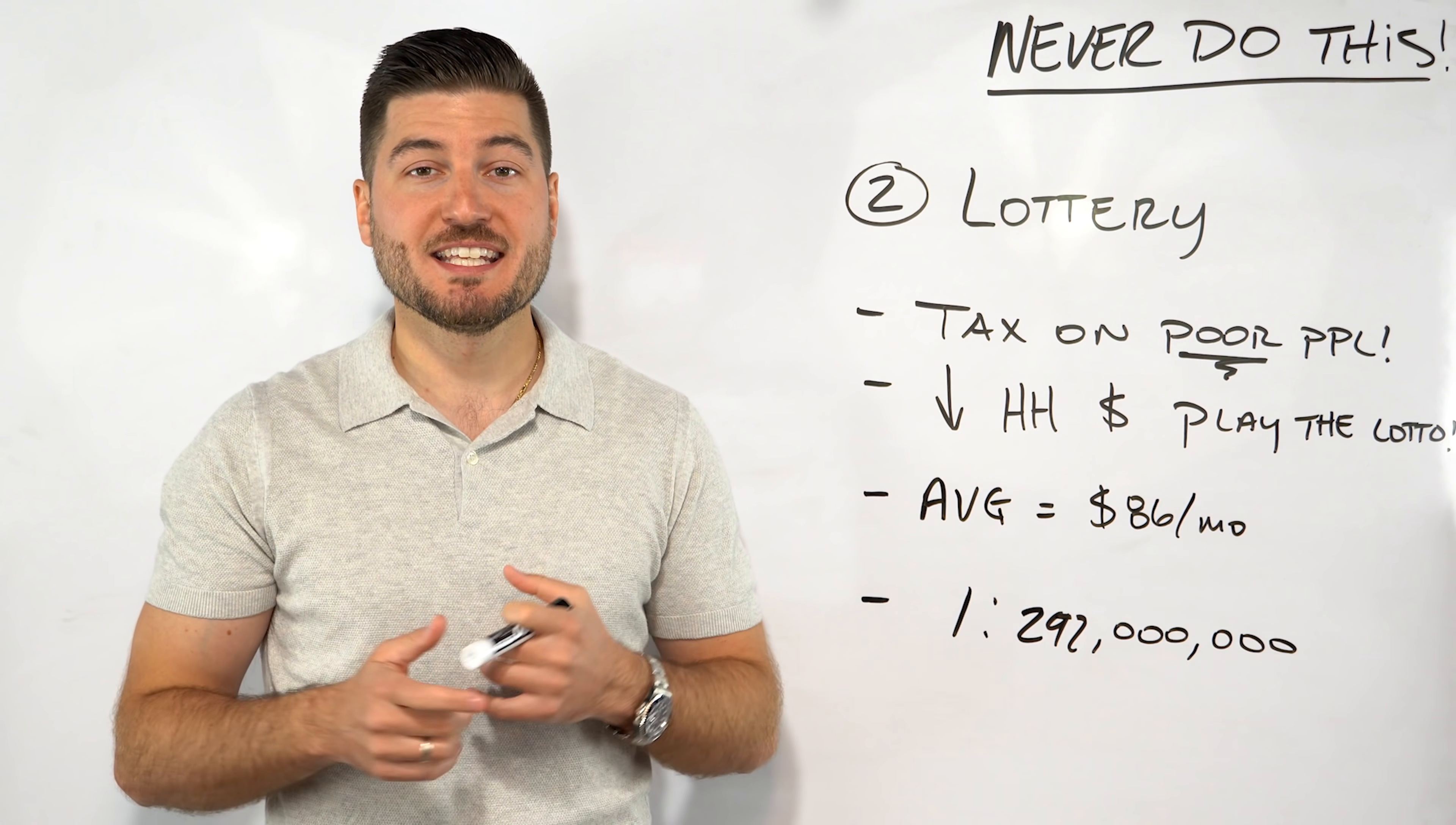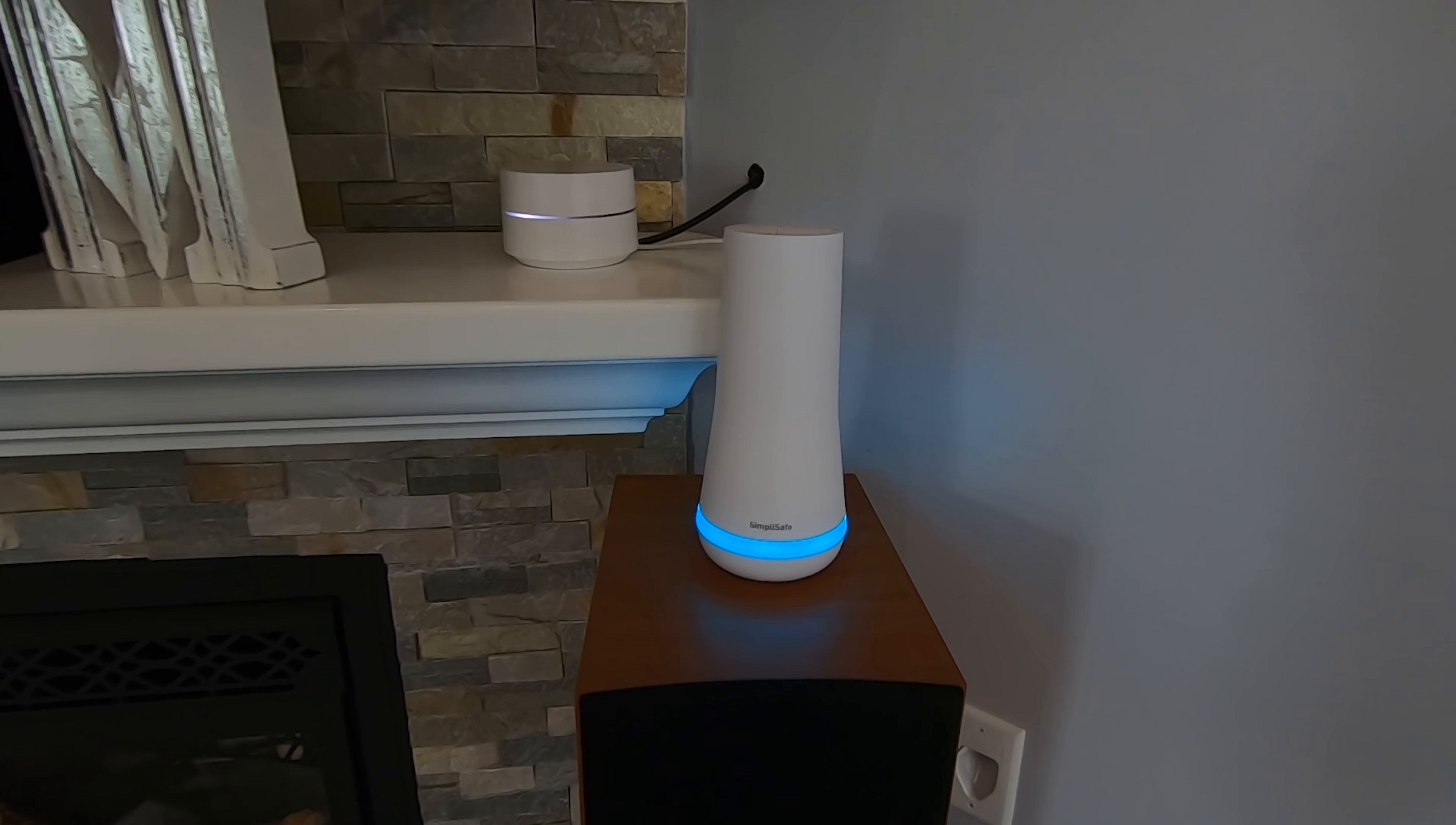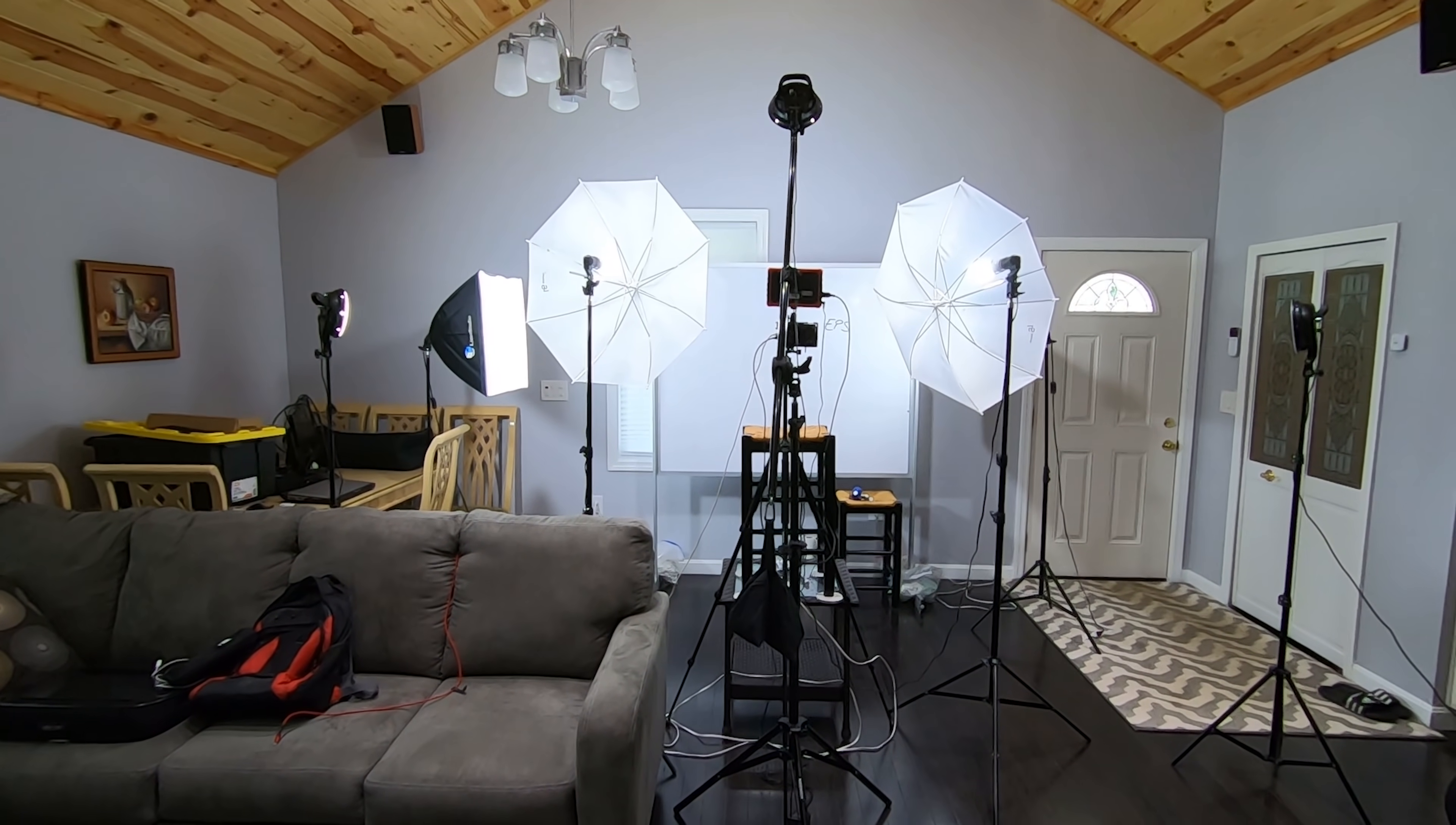Before we get into number three, let's get into the SimpliSafe spot. SimpliSafe is an incredibly effective, reliable home security system that will make sure your home is safe. You order it online or over the phone, it's delivered right to your home, and you set it up yourself in under an hour. You just stick the sensors exactly where you need them. Your home is professionally monitored 24/7. If anything happens, they'll make sure the police gets called. They've got sensors to cover every window, room and door, plus water sensors, temperature sensors, and HD cameras. It's all really easy to use and you get around the clock protection for just 50 cents a day with no contracts. They've won US News and World Report's best overall home security system of 2020.